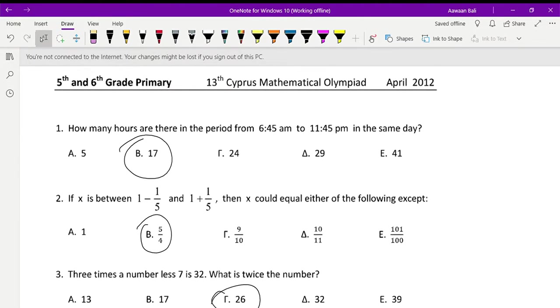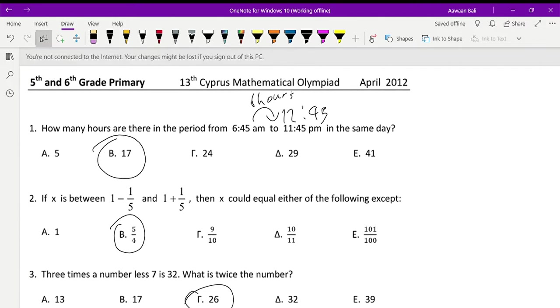How many hours are there in the period from 6:45am to 11:45pm in the same day? Since we know that the minutes are the same, we can directly find the answer because that means it's only going to be a jump through hours. From 6:45am, 6 hours gets you to 12:45pm. After that, it's 11 hours to get to 11:45pm.